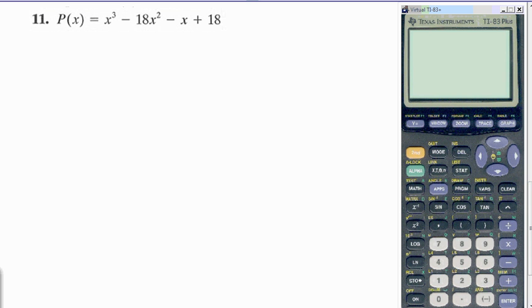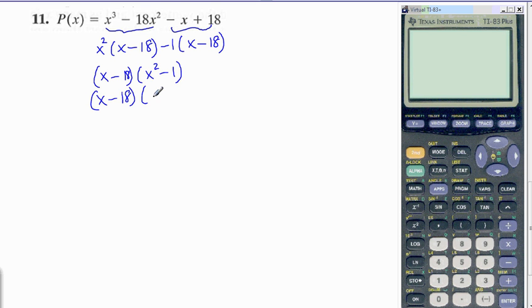This polynomial has four terms and it's factorable by grouping. These two have an X squared in common. We end up with X minus 18. When these two have a negative 1 in common, we end up with X minus 18. So we end up with X minus 18 times X squared minus 1, and X squared minus 1 can be factored. It's a difference of squares. It's factored into X minus 1 times X plus 1.